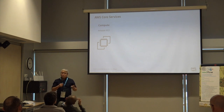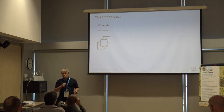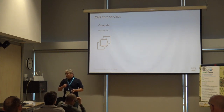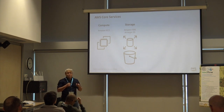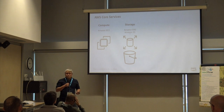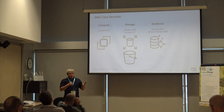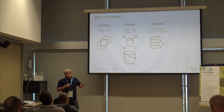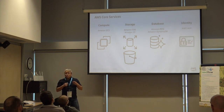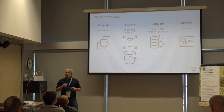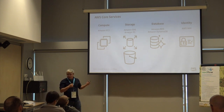There is compute — EC2 instances, think of these as Linux servers in the cloud. There's storage — EBS volumes, think of those like hard drives; S3 buckets, which are object stores; and databases, both relational and non-relational like DynamoDB. And then there's security and access management — authentication and authorization for all of your resources in AWS.